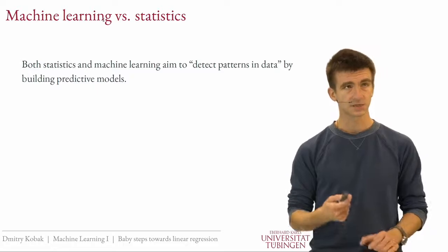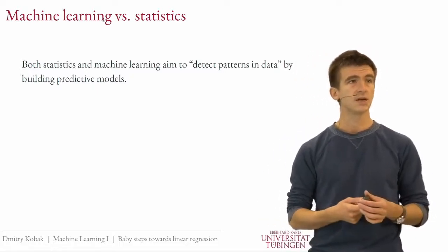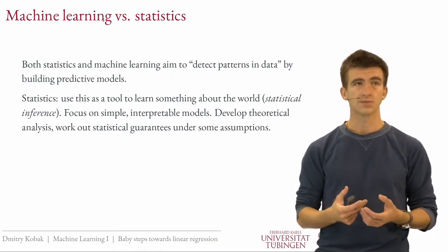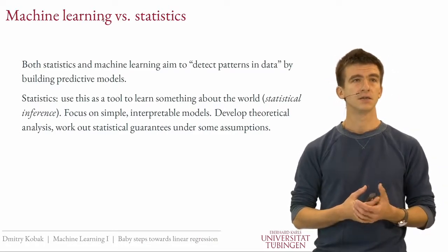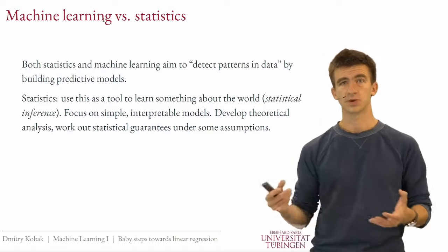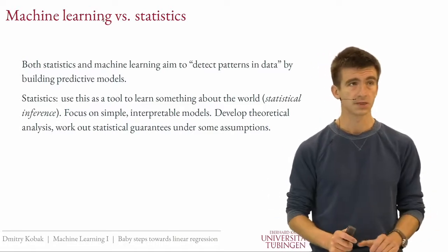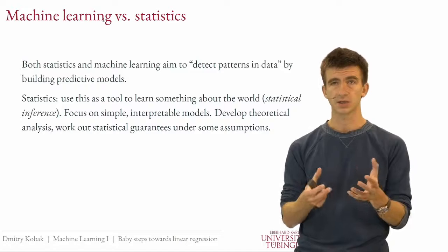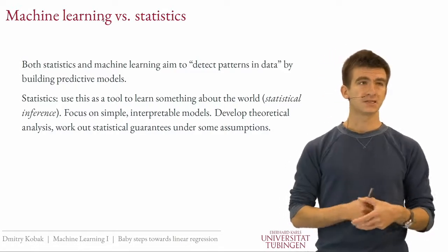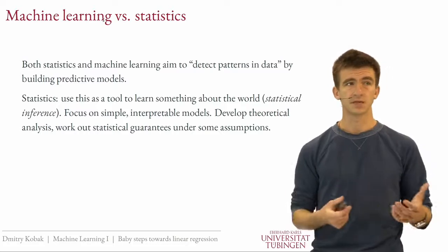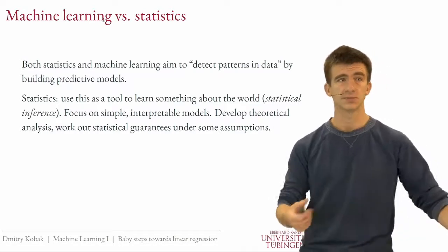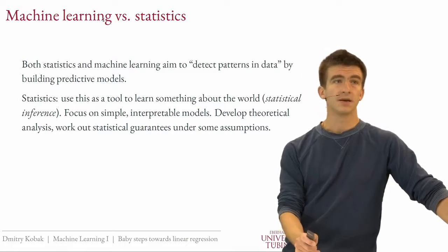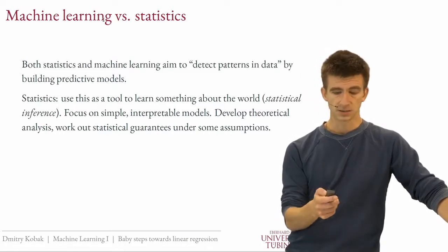Let me offer my perspective. Both statistics and machine learning aim to detect patterns in data by building predictive models. The emphasis is slightly different. Statistics will use this as a tool to learn something about the world — it's called statistical inference. We want to infer some properties of the world that reveal themselves through noisy observations. The focus is therefore on simple, interpretable models such that after you fit the model you can actually look at it and learn something. Since the models are relatively simple, one can develop a lot of theoretical analysis, work out how estimation procedures will work under some assumptions, what are the statistical guarantees, and so on. If you're taking any statistics course in parallel with this one, you will see how this actually applies.